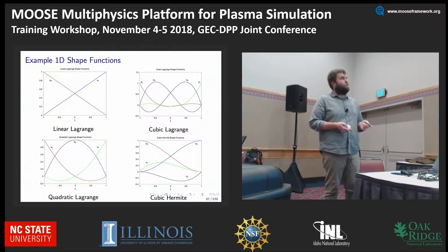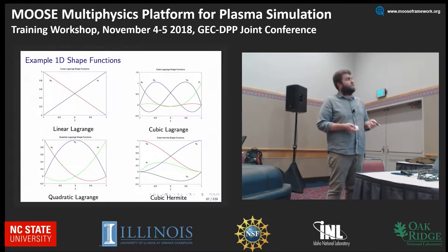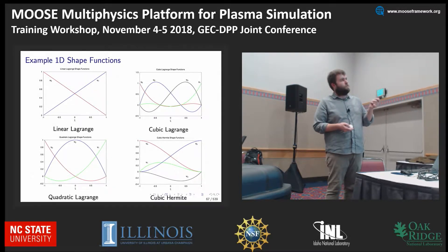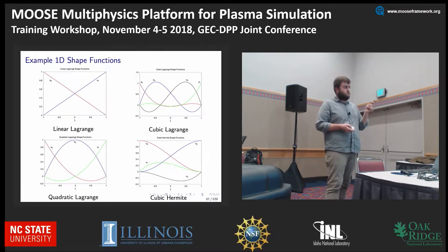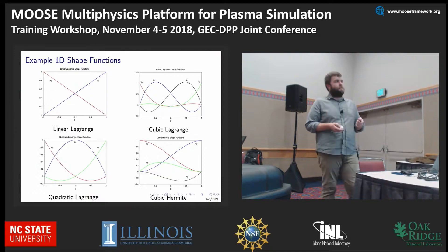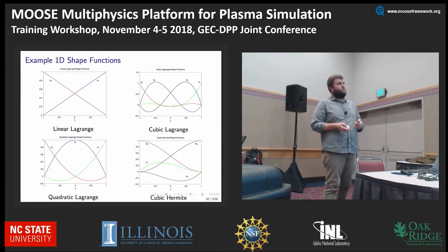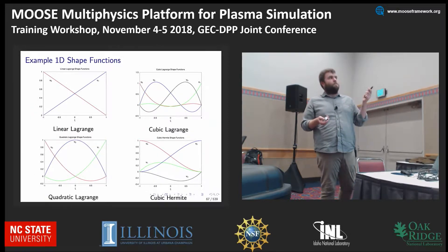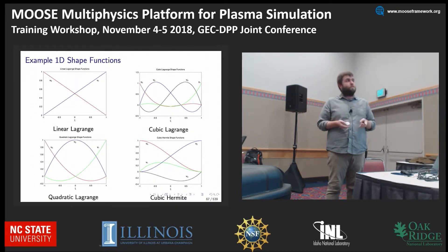This is a visual example of all of these in terms of order: linear Lagrange, quadratic Lagrange, second order, third order, and fourth order, or cubic Hermite. These all serve different needs. If you have a wildly oscillatory problem, you might want to use a higher-order basis function in order to capture all of that.